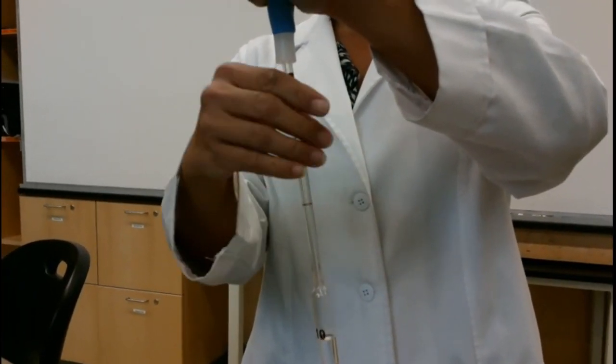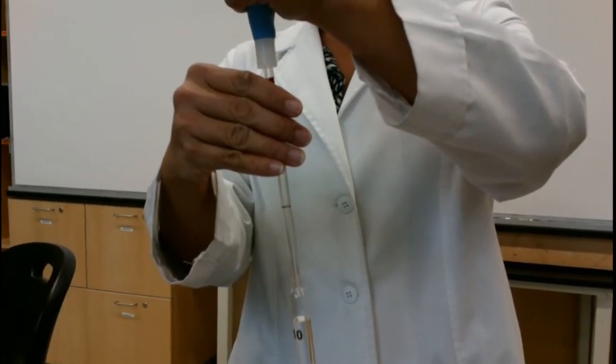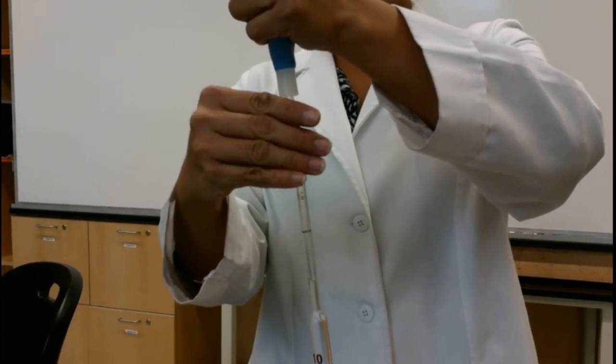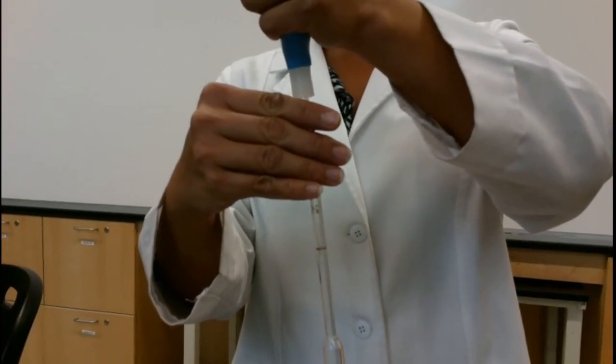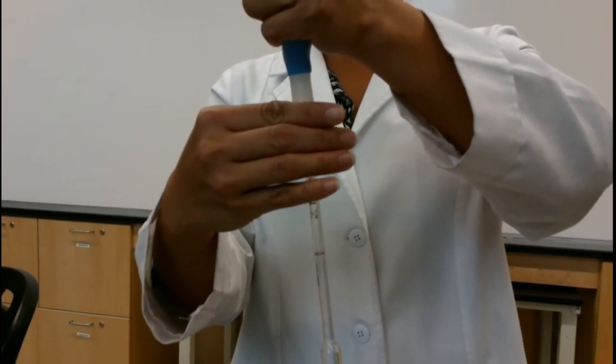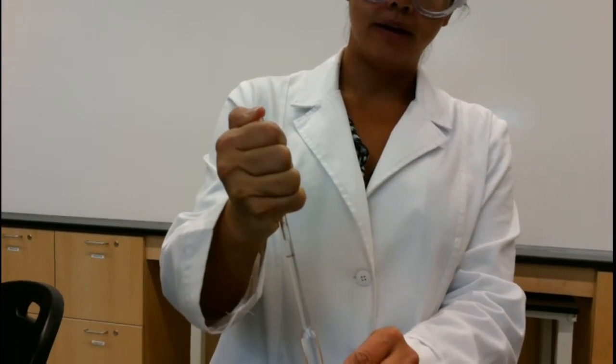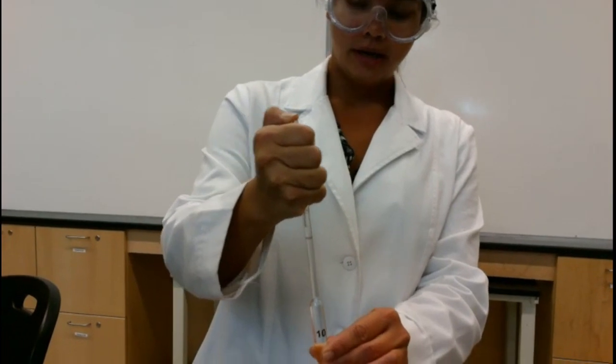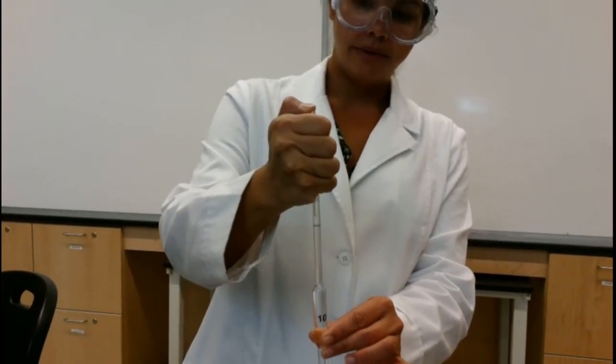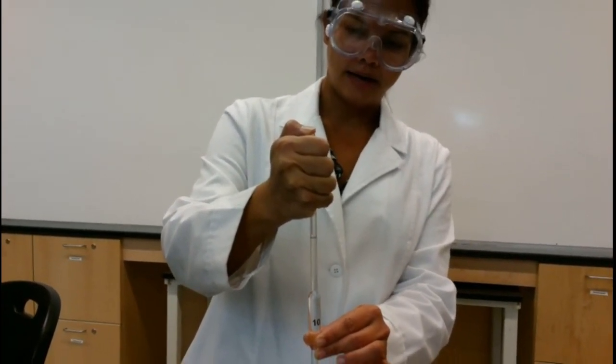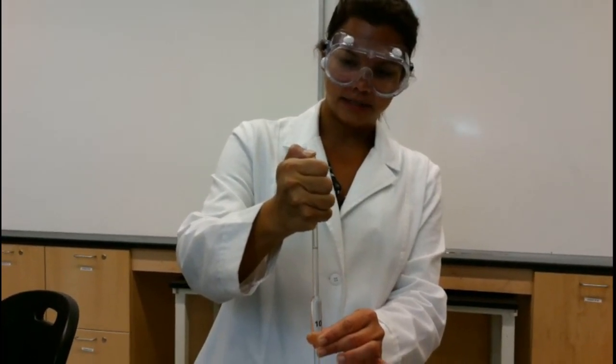It'll go through the little bulb section and then you want to kind of aim for past the pipette marking. And this is where a lot of students end up getting very frustrated because the patience starts to get really tested.